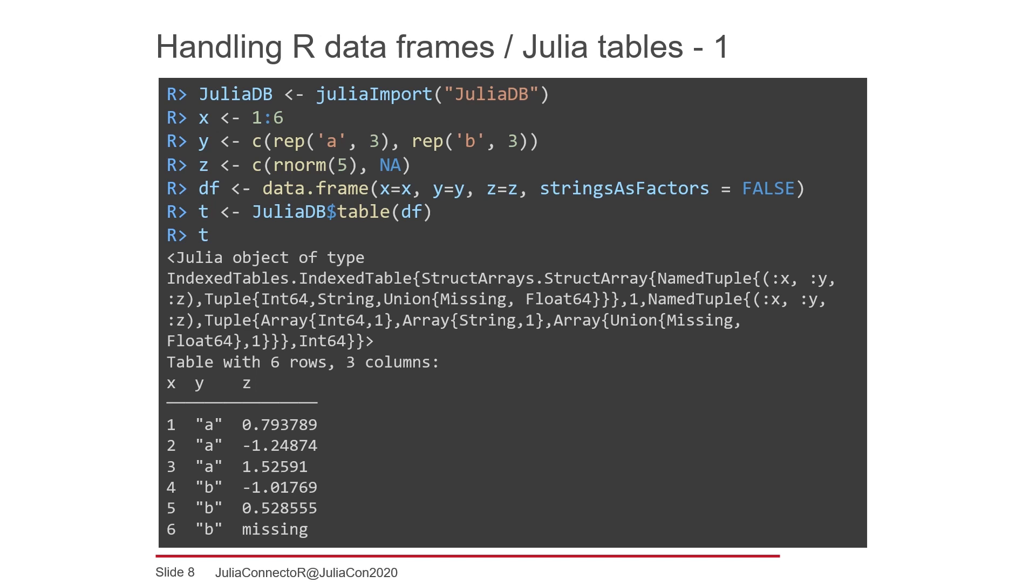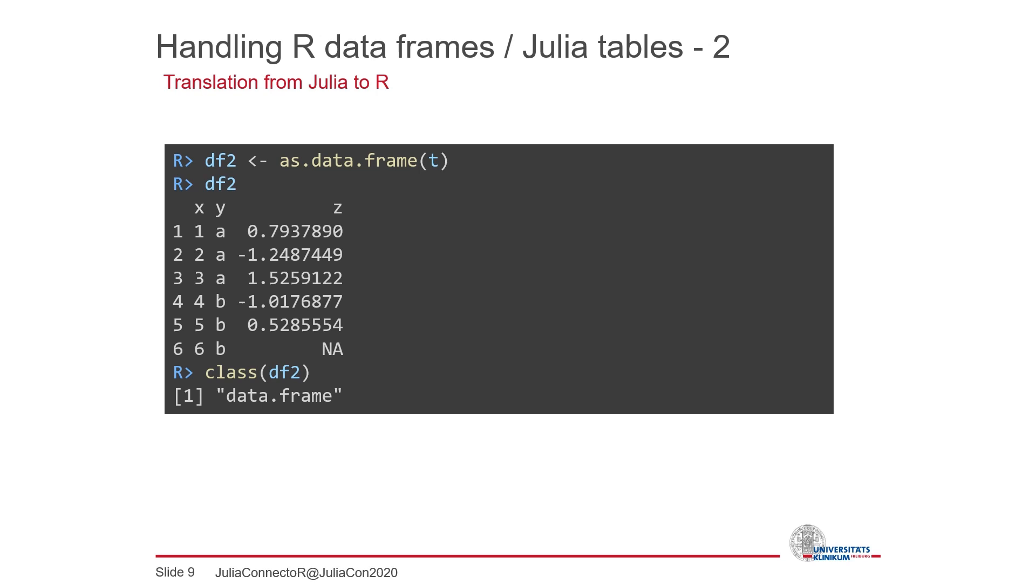With a call to asDataFrame, you can get a normal R data frame object from any Julia object that implements the tables interface, like the object we have created in the slide before.